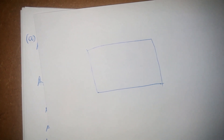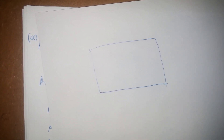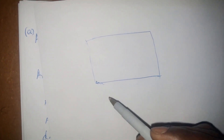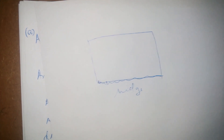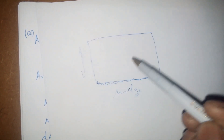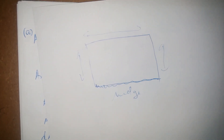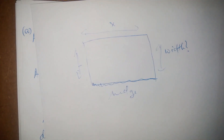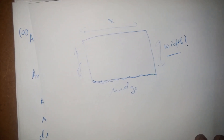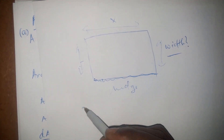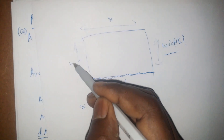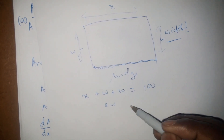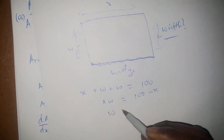Going back to our question, I'll represent this diagrammatically — we have a rectangular garden like this, and there's a fence of 100 meters. One side is to be fenced by a hedge, which saves our fencing. So the total of these three sides must equal 100 meters. If we let our length equal x, then the two widths plus x must equal 100.